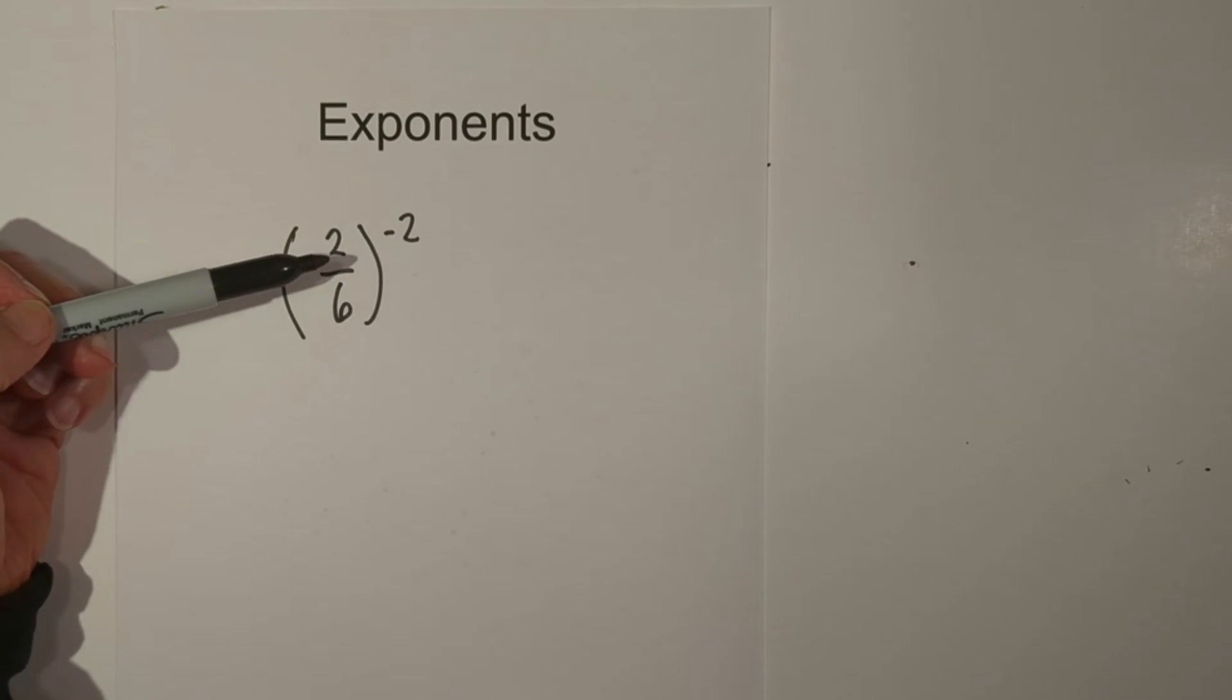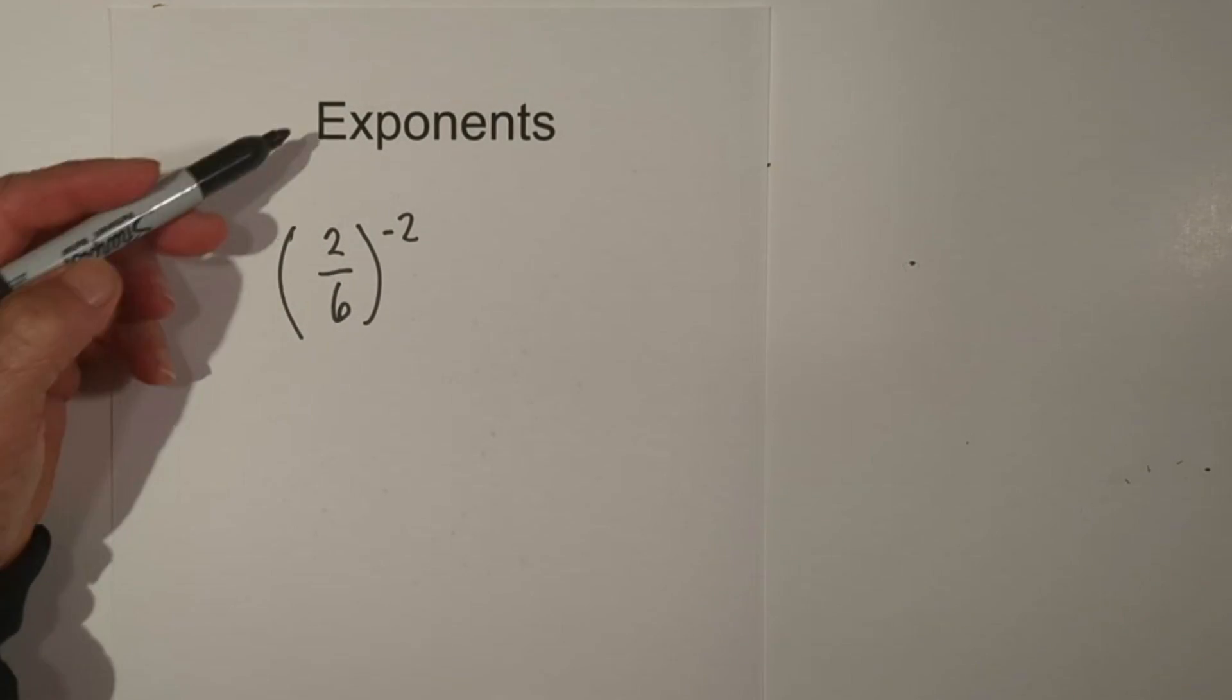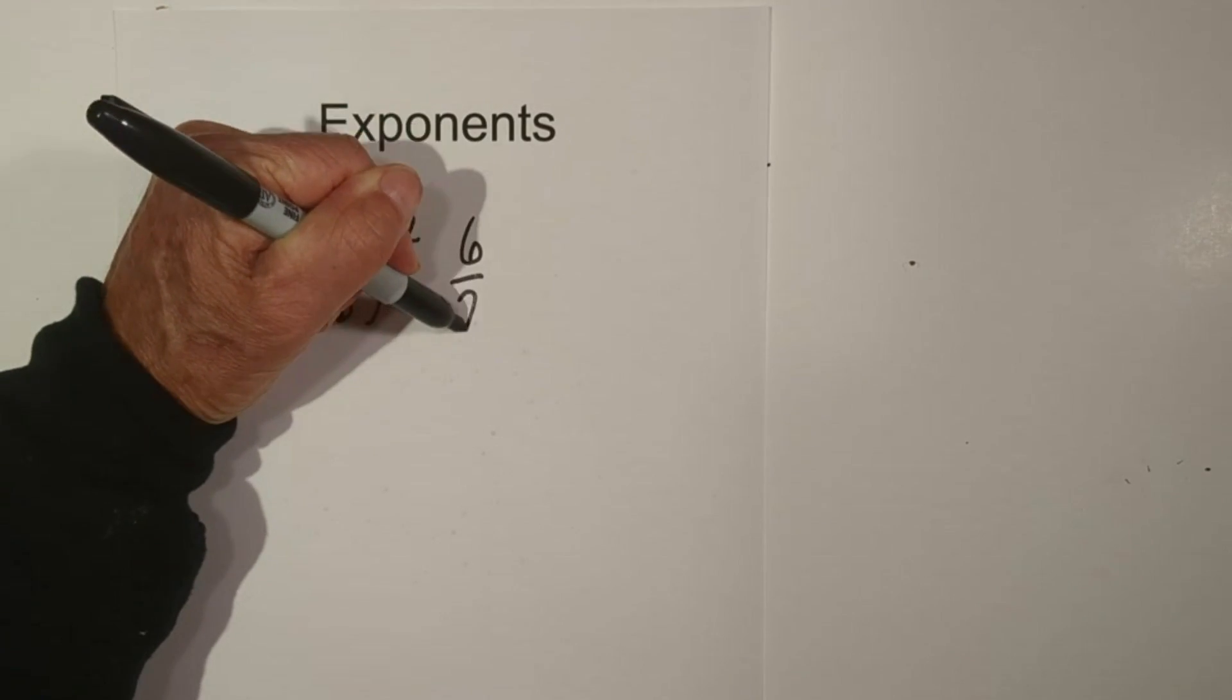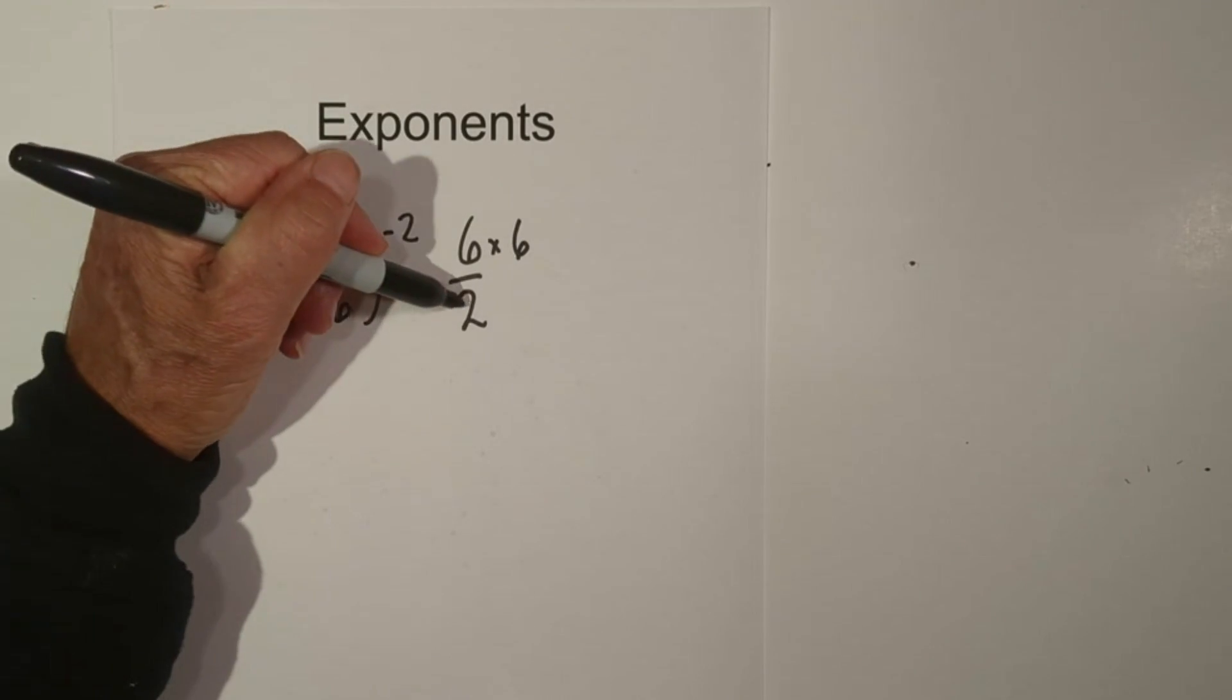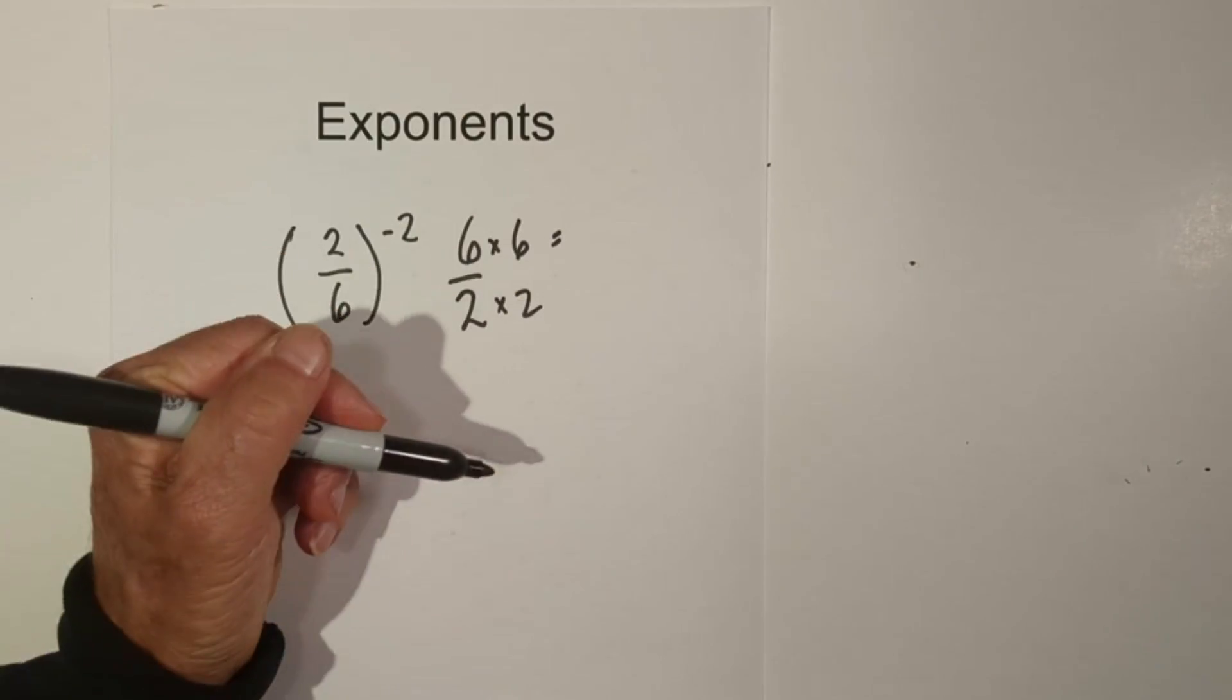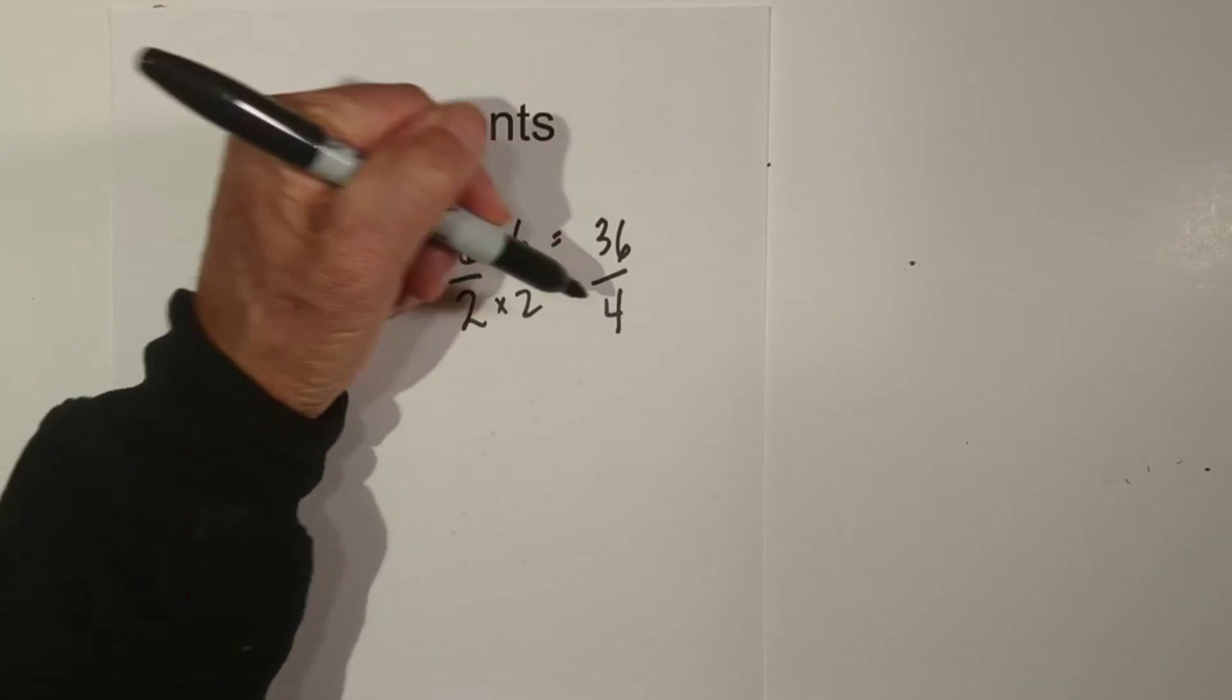So basically, in order to turn it to a positive, you need a reciprocal. So it will become 6 over 2. And then 6 to the second power is 6 times 6, and the 2 to the second power will be 2 times 2. And that equals 36 over 4.